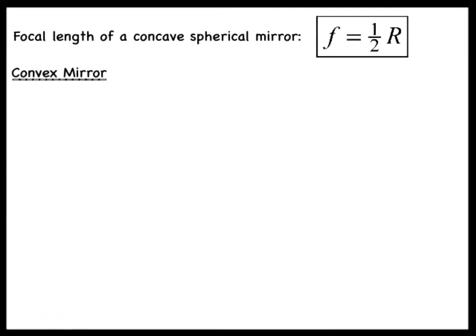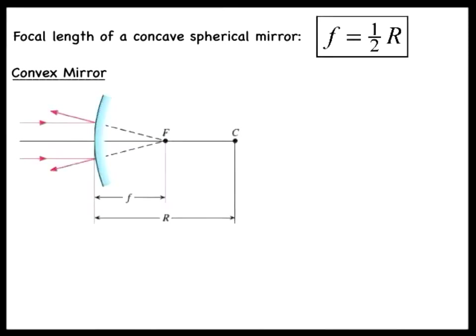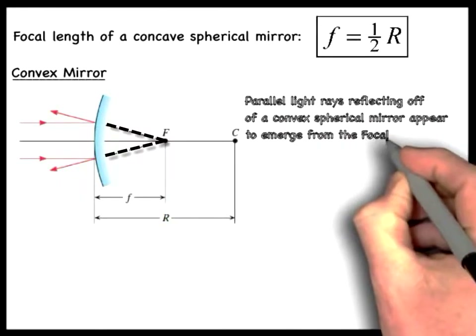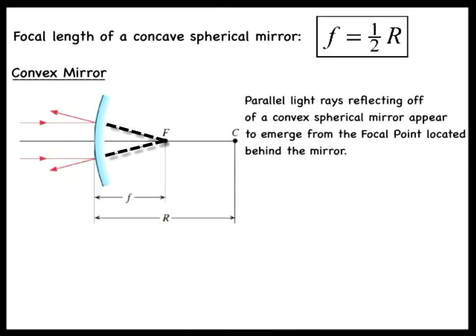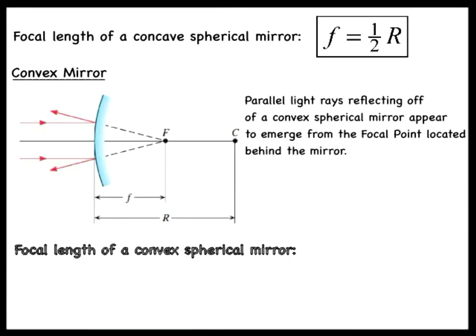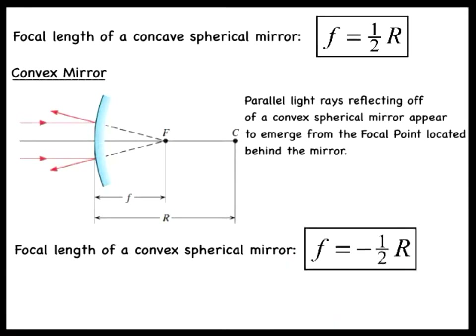Likewise, a convex spherical mirror also has a focal point. Light rays coming from an object very far away are parallel to the principal axis. Upon reflection, the light rays head away from the principal axis. The reflected rays from a convex mirror are diverging and will never intersect to form a real image. However, if we extrapolate the reflected light rays back behind the mirror, they appear to emerge from a common point — this is the focal point of the convex mirror. The focal length of a convex spherical mirror is equal to negative one-half of the radius of curvature.